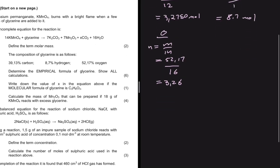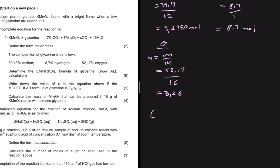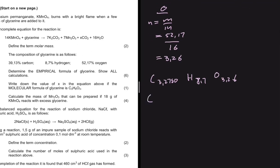So we have carbon with 3.2750 moles, hydrogen with 8.7 moles, and oxygen with 3.26 moles. We take the smallest number and divide every value by it. Dividing 3.27 by 3.26 gives approximately 1. Dividing 8.7 by 3.26 gives 2.67. Dividing 3.26 by 3.26 gives 1.